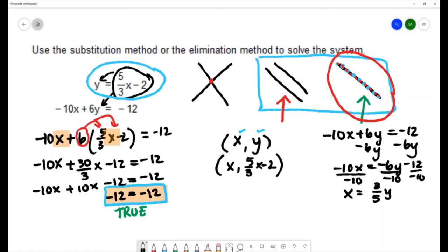And that 12 over 10 both of them are even. So 2 goes into 12 6 times. 2 goes into 10 5 times. So we could write our ordered pair xy as 3 fifths y plus 6 fifths comma y. So that would be it in terms of the variable y.